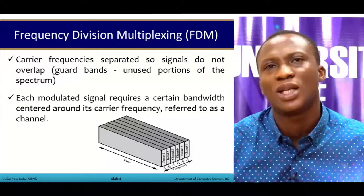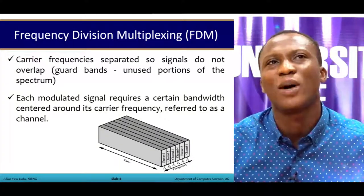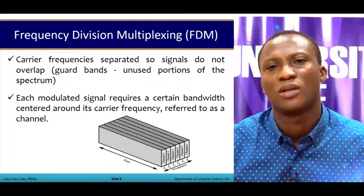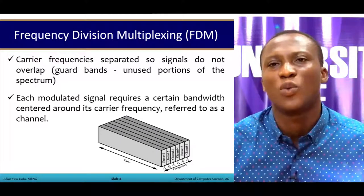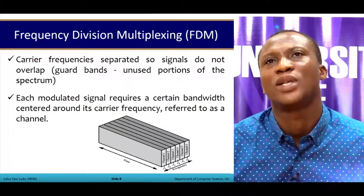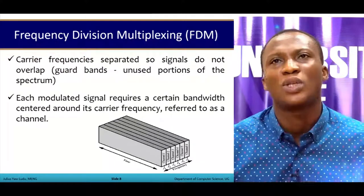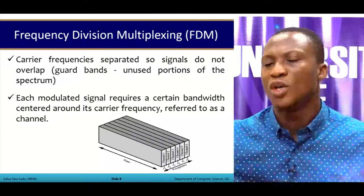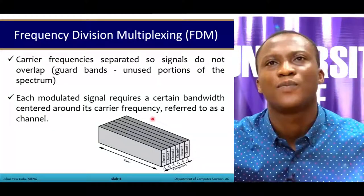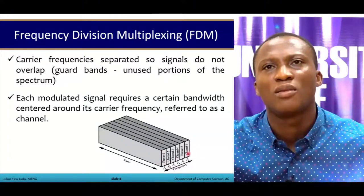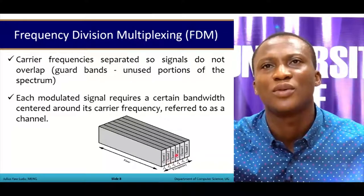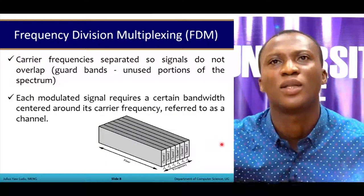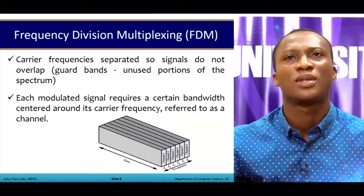Each modulated signal requires a certain bandwidth centered around its carrier frequency. So per each carrier frequency, a certain bandwidth is allocated. We can see these frequencies being divided into channels: channel 1, 2, through channel 6.